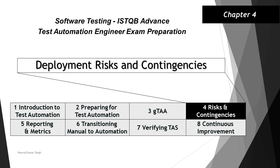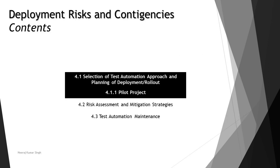Here we'll be having three different topics to be covered, with a lot of subtopics. As part of the very first tutorial of this chapter, we are covering 4.1, that is selection of test automation approach and planning of deployment rollout, and the subtopic is 4.1.1 pilot projects. So let's get started.